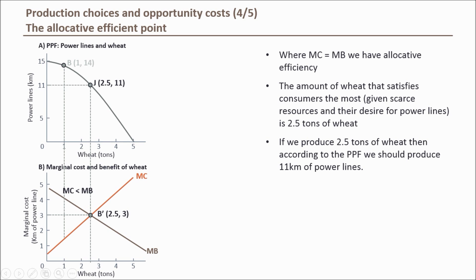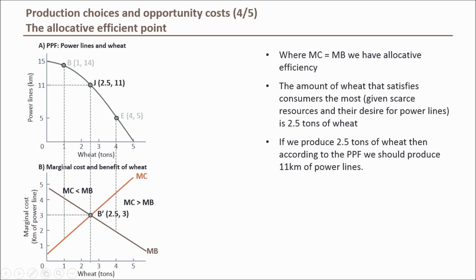In a similar way, if the economy was producing at point E, then marginal cost would be greater than marginal benefit. At this point on the PPF, the economy decides it is producing too much wheat and would rather produce more power lines and less wheat. The cost in terms of forgone power line production is much higher than the benefit from the wheat produced. Therefore, the economy will reallocate productive resources away from producing wheat to producing more power lines.